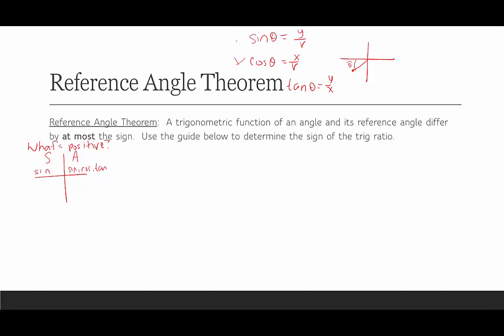In quadrant 3, x and y are both negative. Sine would be negative over positive — not positive. Cosine would be negative over positive — no. Tangent is negative divided by negative, which is positive. So tangent is the only positive trig function in quadrant 3.